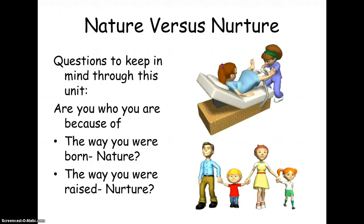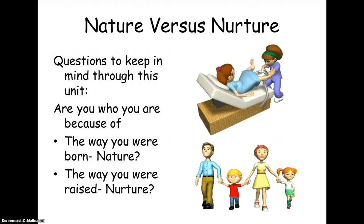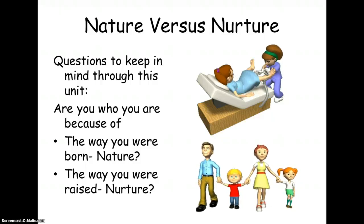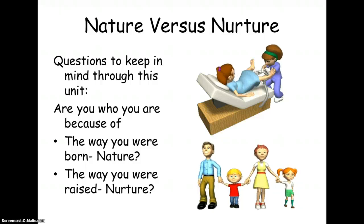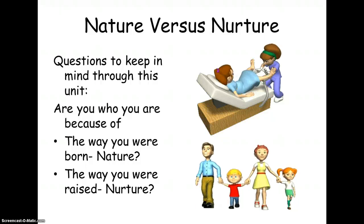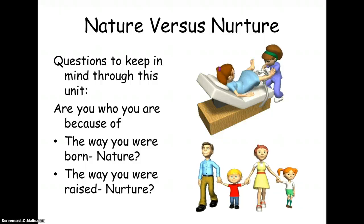Thinking back to research methods, you might ask how you design an experiment to differentiate between nature and nurture. Twins are really the best way to study this issue. The best method is when there is a set of identical twins — two people with almost exactly the same genetic makeup — raised separately, separated at birth. There aren't a lot of these individuals, but there has been extensive research on them, allowing you to distinguish between what is nature and what is nurture.